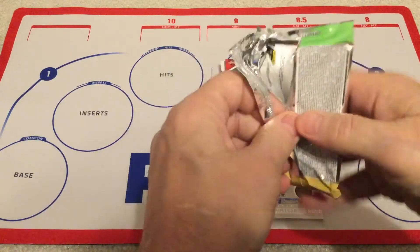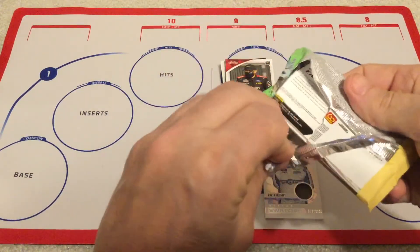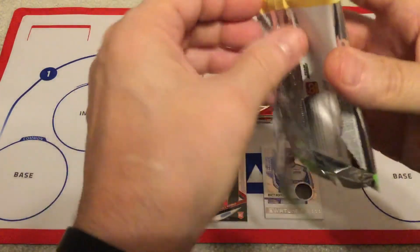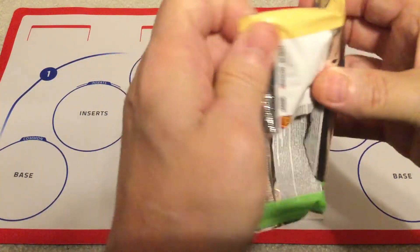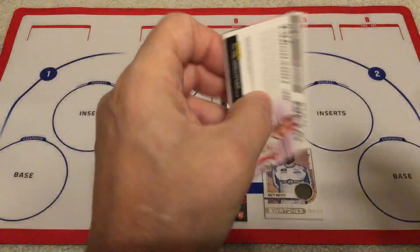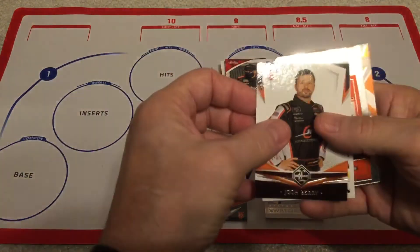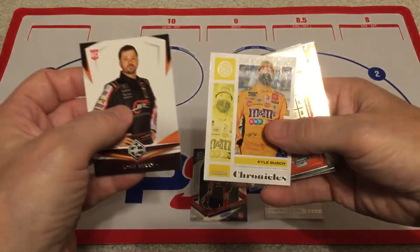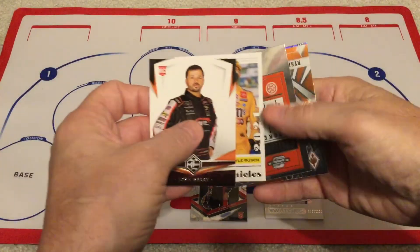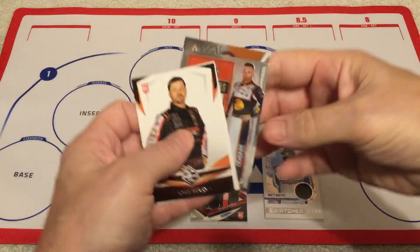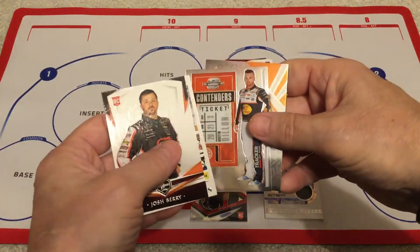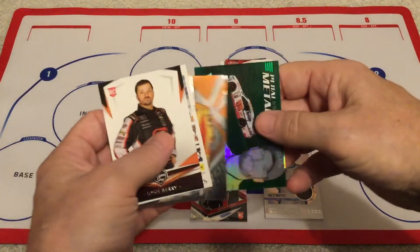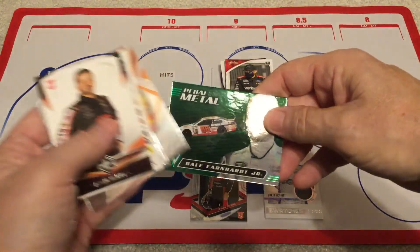All right. Last pack. It's skinny. So, I'm not expecting any kind of hits out of this pack. Except for it just didn't open up right. There we go. All right. So, there's Josh Berry again. Kyle Busch. Austin Dillon in Contenders. Ryan Newman in Phoenix. And Pedal to the Medal of Junior.